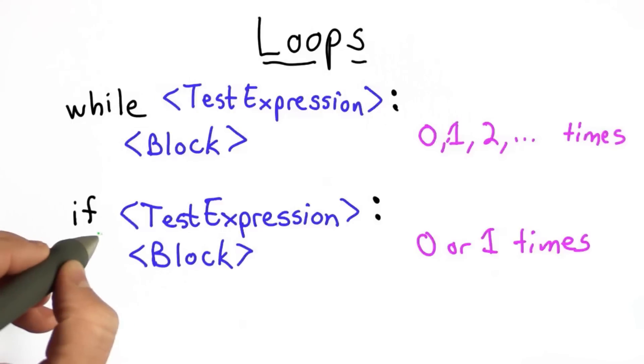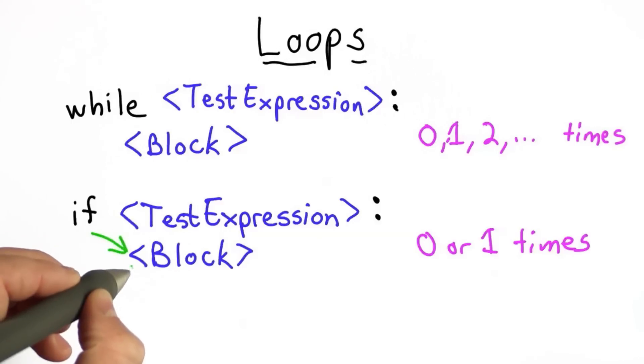So with an if statement, if the test expression is true, we go to the block, run the block, and then continue. If the test expression was false, we go right to the next expression.